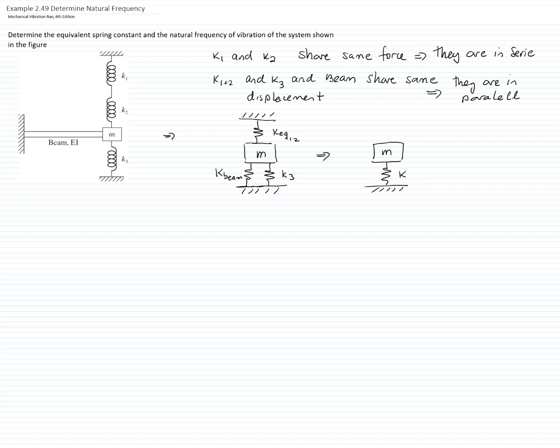So we said that K1 and K2 are in series, therefore we can add the inverse of those springs, therefore we can get that the equivalent constant for K1 and K2 will be K1 times K2 divided by K1 plus K2.